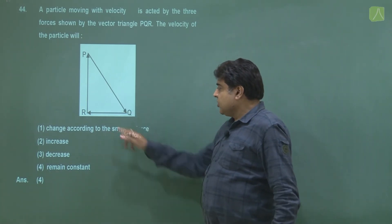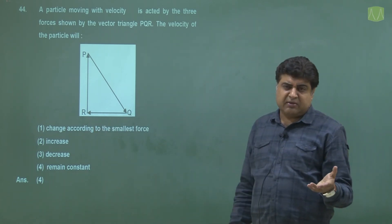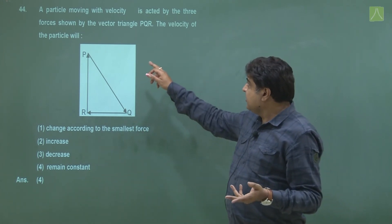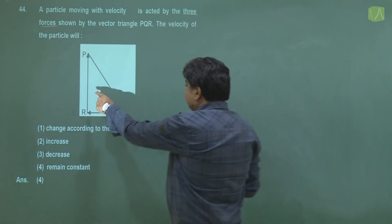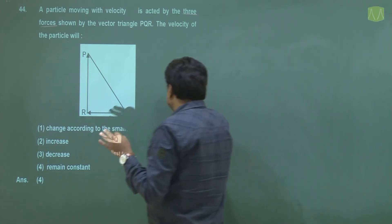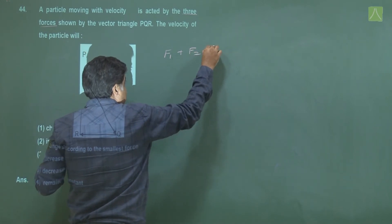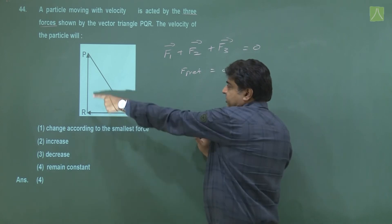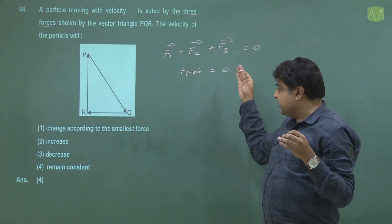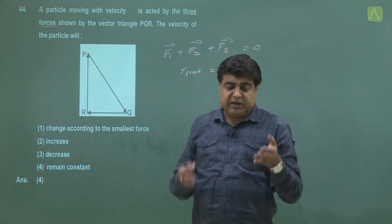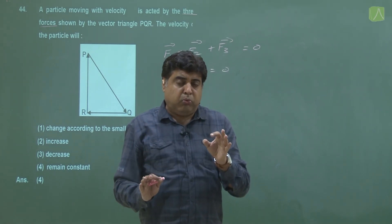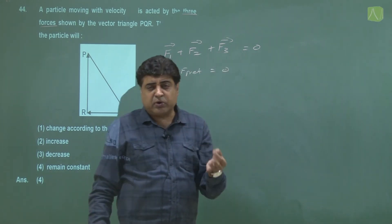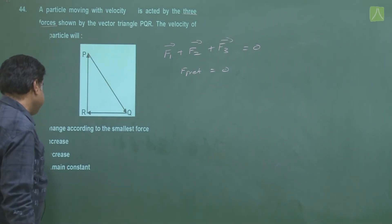Here we have a closed loop vector diagram. By vector addition rules, if vectors are added head to tail in a closed loop, the net resultant is zero. There are 3 forces F₁, F₂, F₃ whose vector sum is zero, so F_net = 0. By Newton's first law, if net force is zero, the particle continues with the same uniform velocity. The right option is fourth.